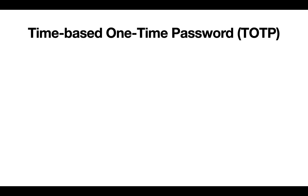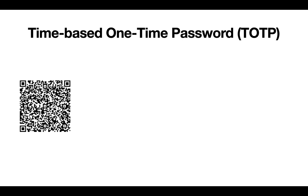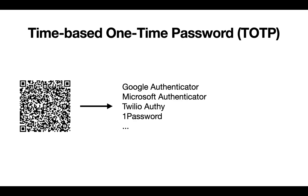Time-based one-time password, or TOTP for short, is a standardized algorithm for generating unique numeric passwords using current time as an input. An application offering TOTP usually presents the user with a QR code, which they can scan into an authenticator app. This authenticator app then displays the generated numeric codes, which are rotated typically every 30 seconds.